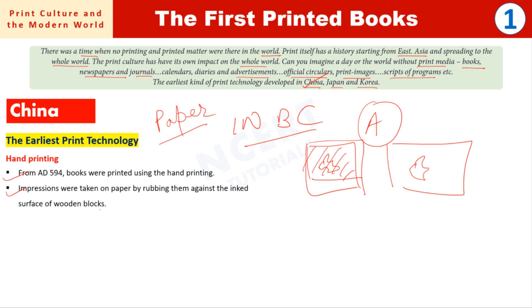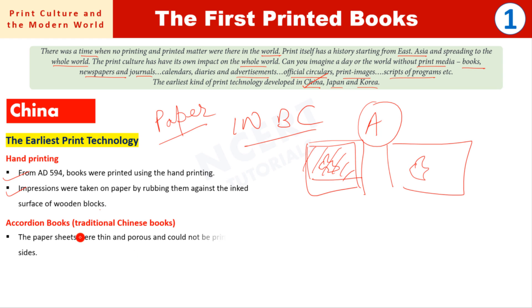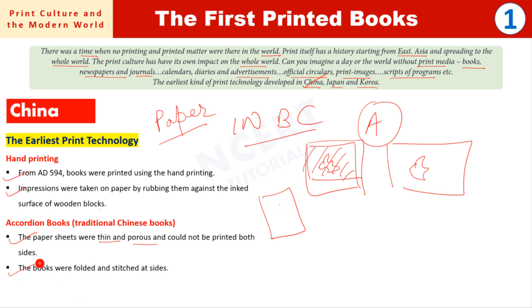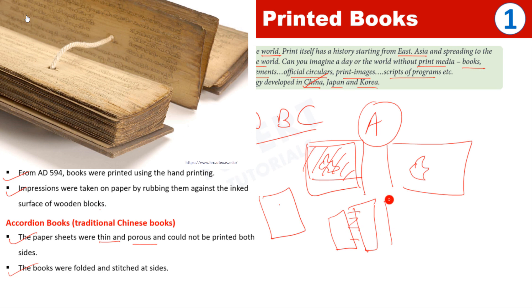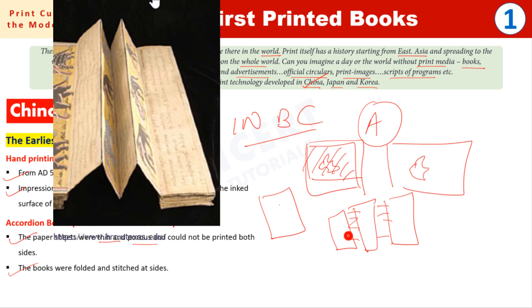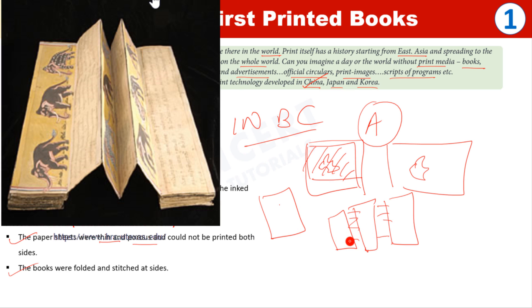The books printed through hand printing were called accordion books, which are traditional Chinese books. The papers used were thin and porous — meaning ink would soak through, so printing could not be done on both sides. The books were folded and stitched at the sides. Each sheet stitched at the sides was then folded, and this is how accordion books were prepared, as you can see in the image.